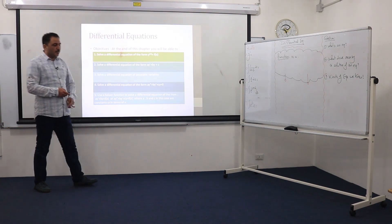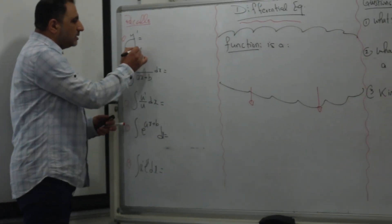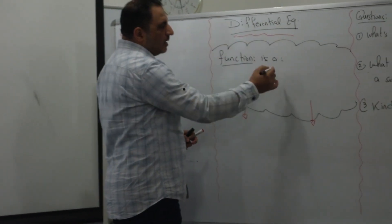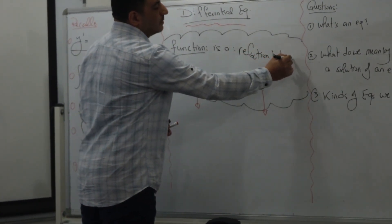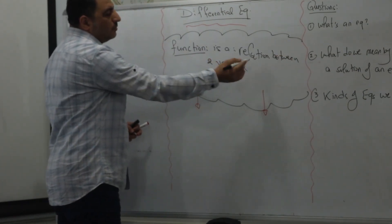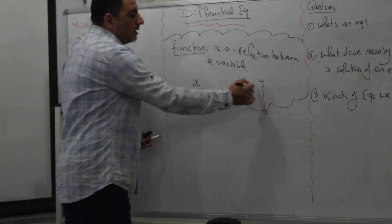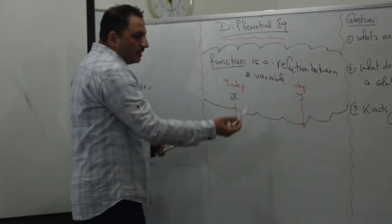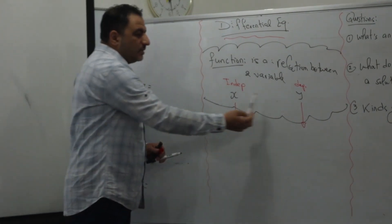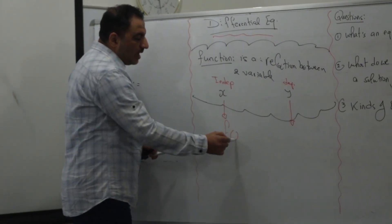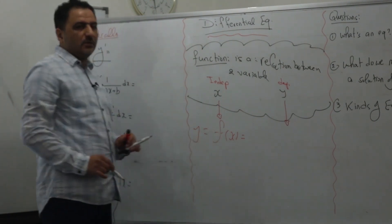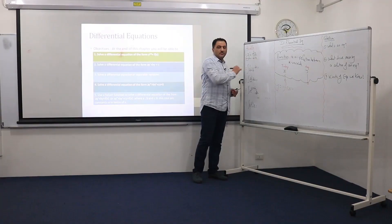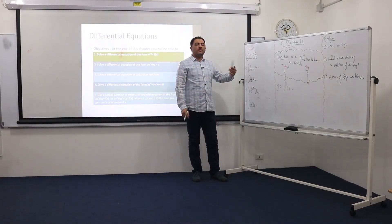Before we start our study, let us remember something we know. If you see the symbol y prime — what is y prime? We have to recall what is a function. A function is a relation between two variables. Usually in math, we label them as x and y. x is called the independent variable, and y is the dependent variable. A function is a relation such that every x has only one y. We call it f(x), or y = f(x). The symbol y prime means the derivative of y. The proper way of writing y prime is dy/dx, meaning we are differentiating y with respect to x.